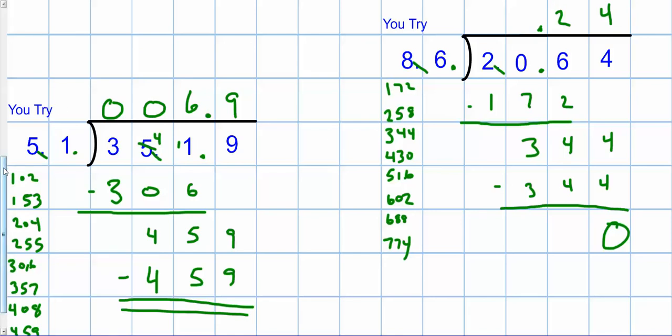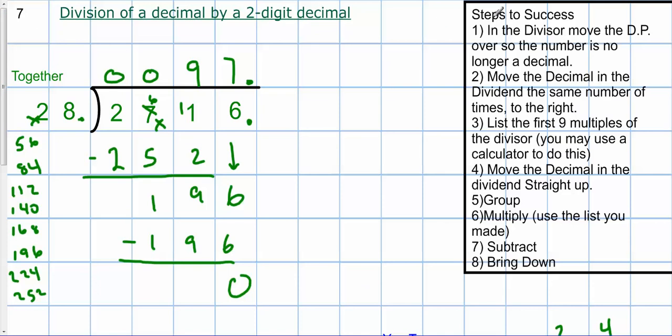So that is seven division of decimals by a two digit decimal.